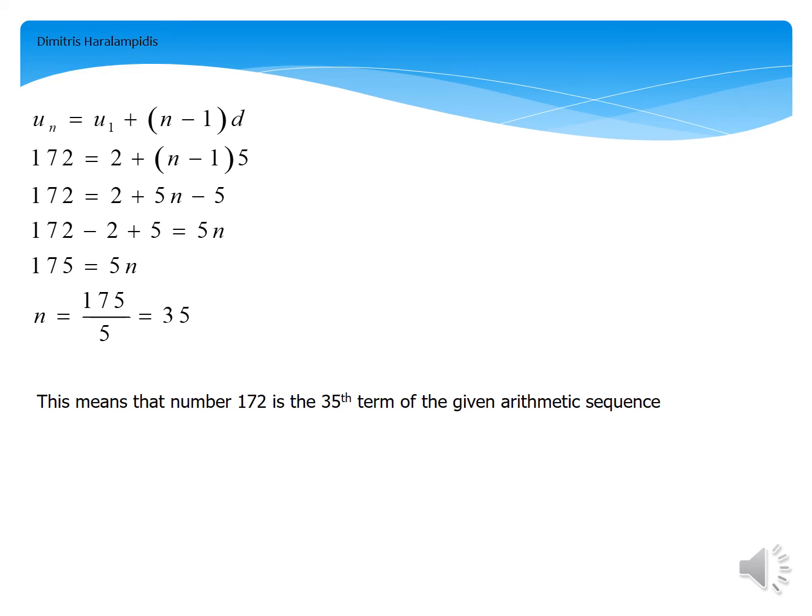Or else 172 minus 2 plus 5 equals 5n, which leads to 175 equals 5n, and then finally n equals 175 divided by 5, which leads to number 35.